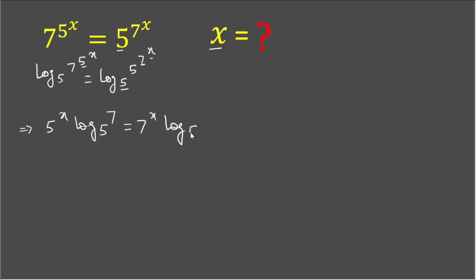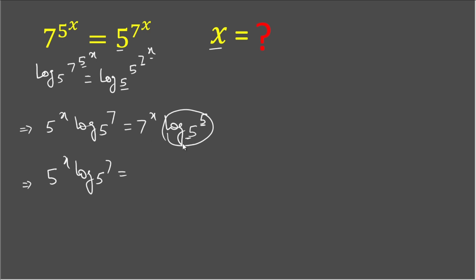Here, the log base value and the power value are the same — log base 5 of 5 — so the value of this term is 1. Therefore, the left-hand side is 5^x · log base 5 of 7, and the right-hand side simplifies to 7^x.